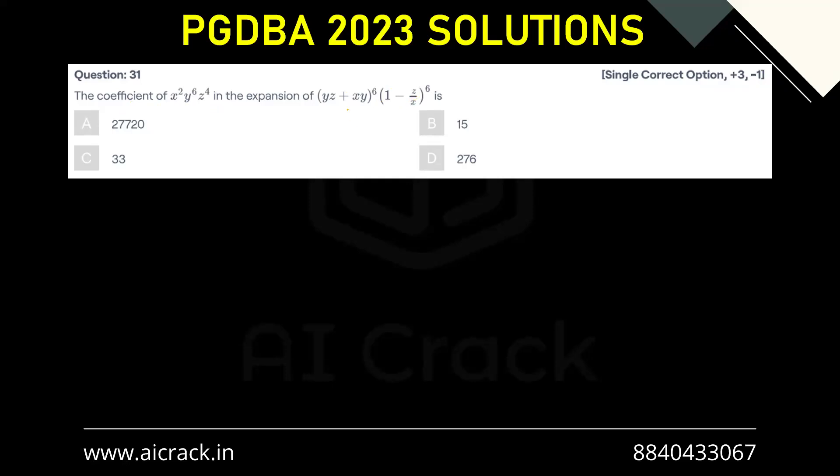Now the obvious solution that comes to my mind is to multiply these terms because they have common powers. If we take this term individually and expand it and then take this term and expand it and then multiply them, it would be practically impossible to get this term and coefficient of this term. So the better way is to multiply them and then expand it.